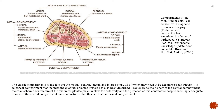The classic compartments of the foot are the medial, central, lateral, and interosseous, all of which may need to be decompressed. A calcaneal compartment that includes the quadratus plantae muscle has also been described. Previously felt to be part of the central compartment, the role ischemic contracture of the quadratus plantae plays in claw-toe deformity has demonstrated that this is a distinct fascial compartment.